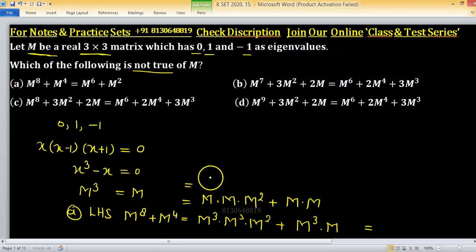Further simplifying this, put M³ equals M again. So M times M, which is M² plus M times M, so we have 2M². This is coming from the left hand side.